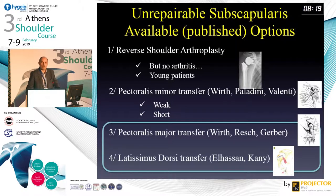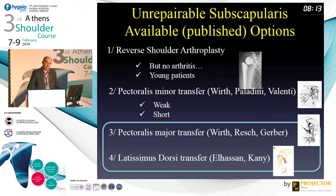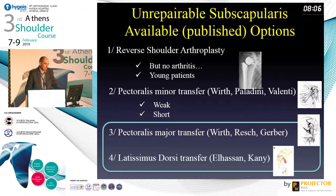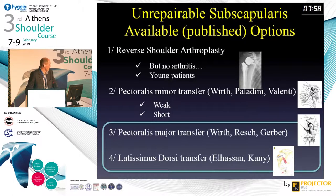Of course we can discuss about reverse shoulder arthroplasty like we've just seen this morning. But in this patient most of the time they are young and there is no arthritis. You can discuss about the pec minor transfer described by Ruiz, Palladini, and Valenti with an arthroscopic procedure, but this transfer is very weak and short. My topic today is what about the pec major transfer in this indication and why not the lat dorsi transfer.